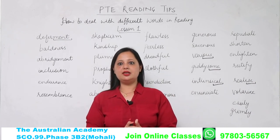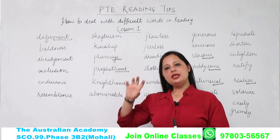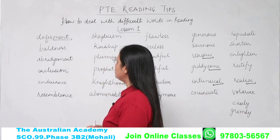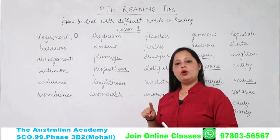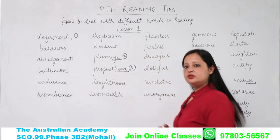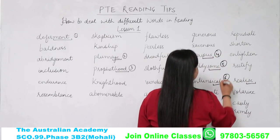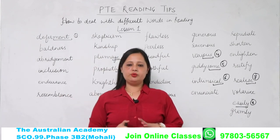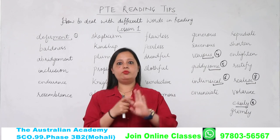So, from the list we have: various, giddyism, intrinsical, realize, and easily. This is a little exercise for you — these words. You can write in the comments which is a noun, verb, adjective, or adverb. Identify what each word is: noun, verb, adjective, or adverb — these four you have to identify.